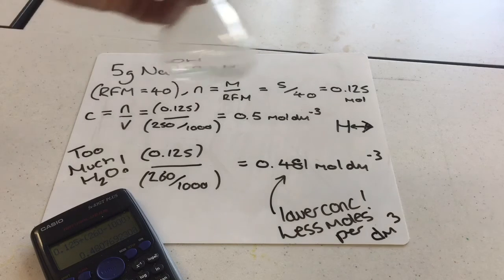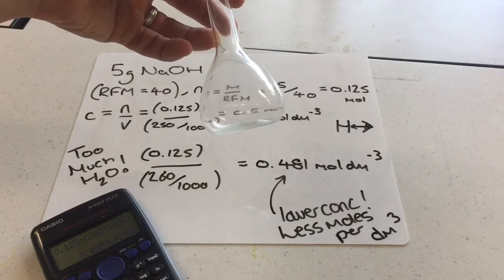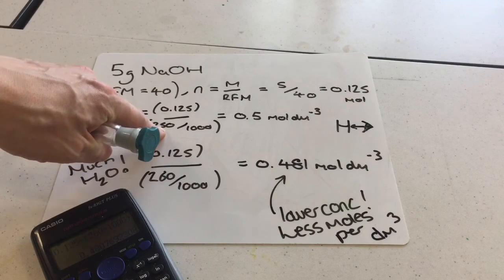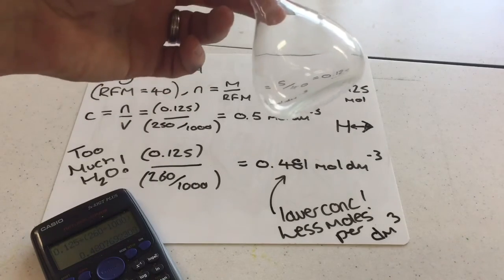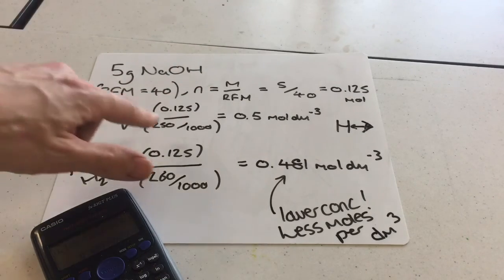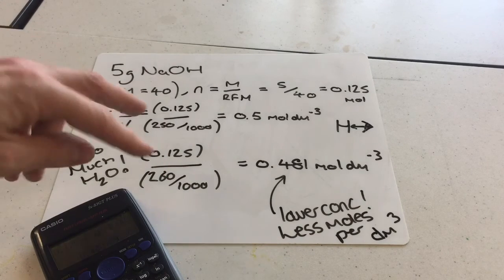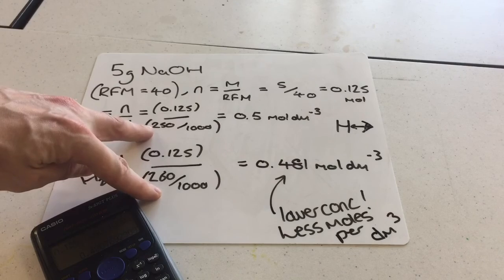So you must make sure that you only fill up to the line, that you don't add 250cm³ of deionised water - you make a solution which is 250cm³, which will use slightly less water than this, but you don't have to be aware of what that number is.